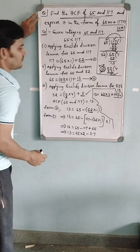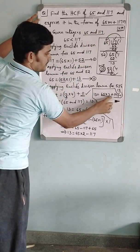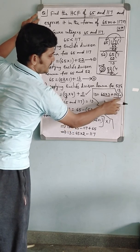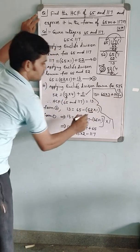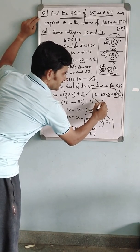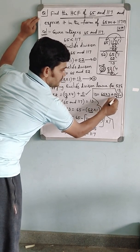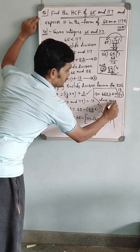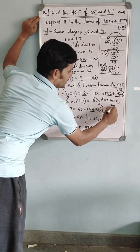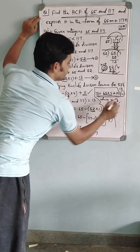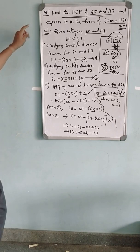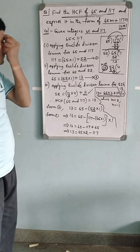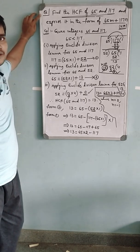Clearly this is in the required form 65M plus 117N, where M equals 2 and N equals minus 1. So this is how we express the HCF in the form of multiples of 65 and 117. I hope you understand. Thank you.